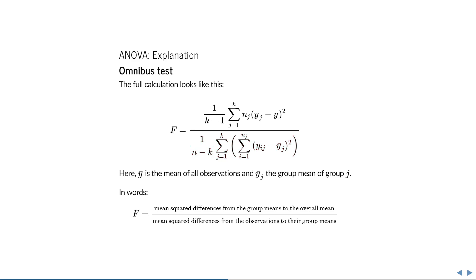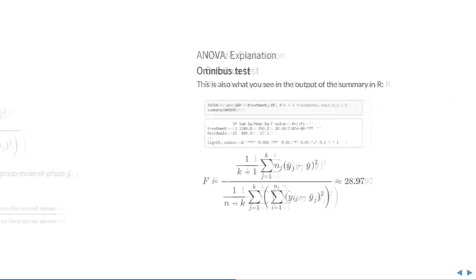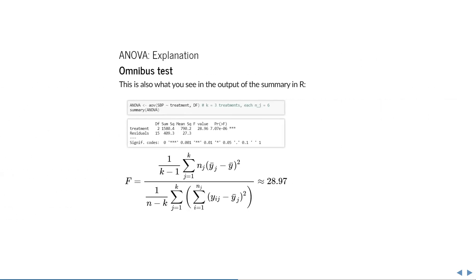You don't have to memorize this formula, but let me show you how it relates to the output shown in R. Continuing the example from part 1, say we have 3 groups, each with 6 observations.